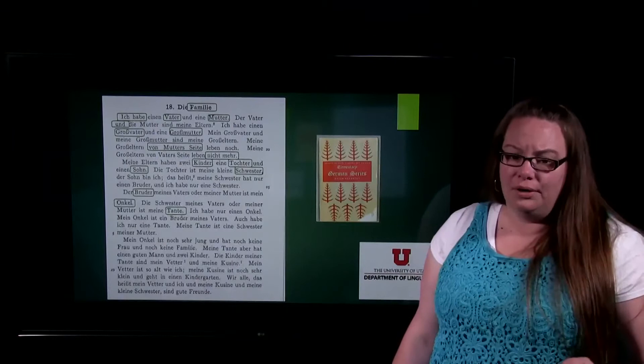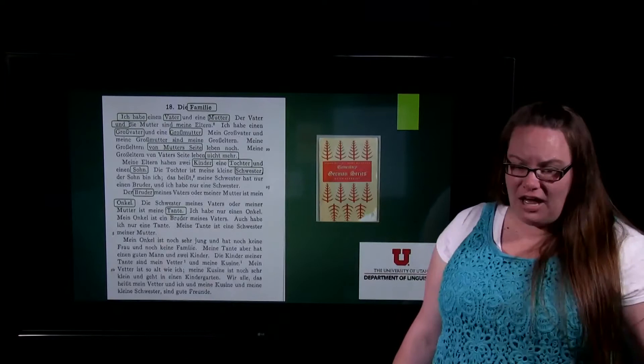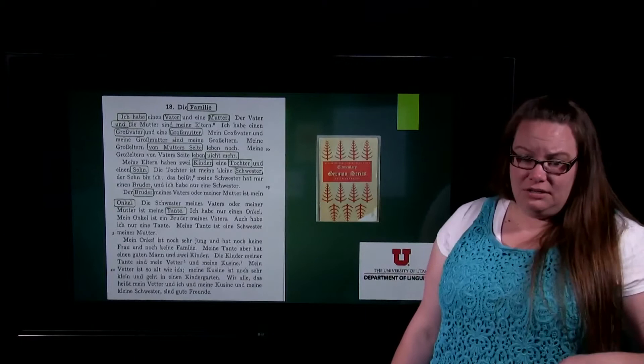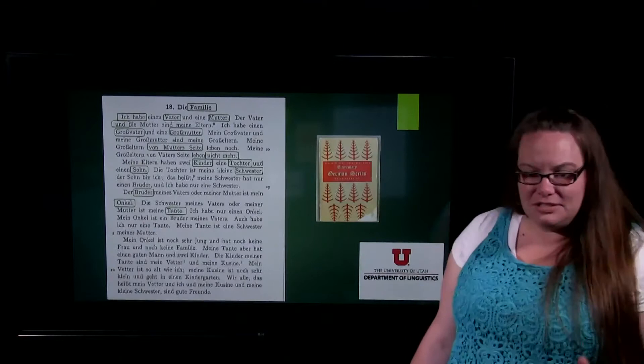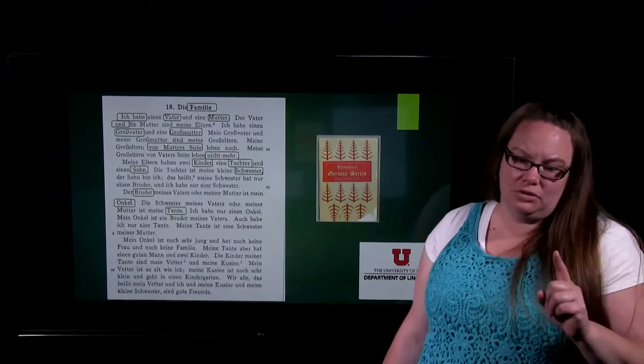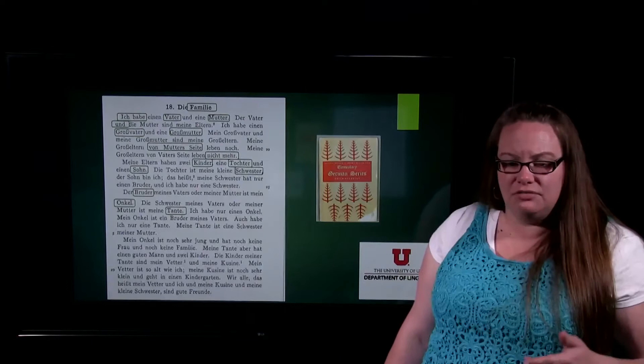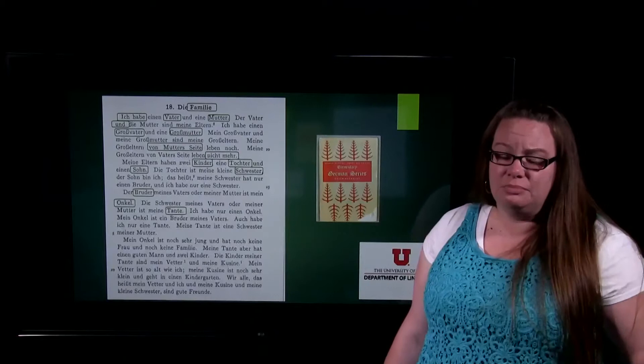'Der Bruder meines Vaters oder meine Mutter ist mein Onkel' — the brother of my father or my mother is my uncle. 'Die Schwester meines Vaters oder meine Mutter ist meine Tante.' 'Ich habe nur einen Onkel' — I only have one uncle. You can see that lots of these words are very similar to the words we still use today in English. So as English moved away from German, some things stayed and some things changed.